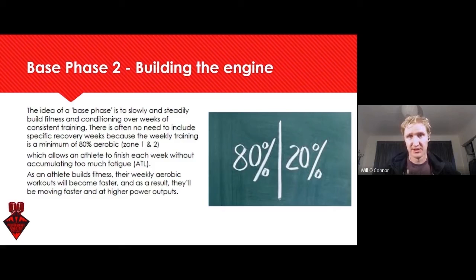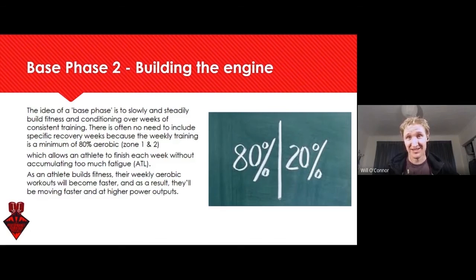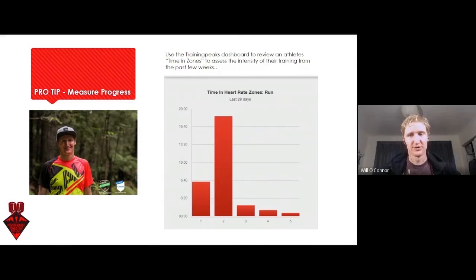Part of this is looking at Training Peaks' performance management chart — specifically the ATL or acute training load — which gives an indication of how much load an athlete is taking on in about a seven-day window. When you're in the base phase, coming off not a lot of hard training or competition, your capacity to absorb hard training and a large acute training load is not what it will be at the end of a base phase, build phase, or race-specific phase. That's something to be mindful of.